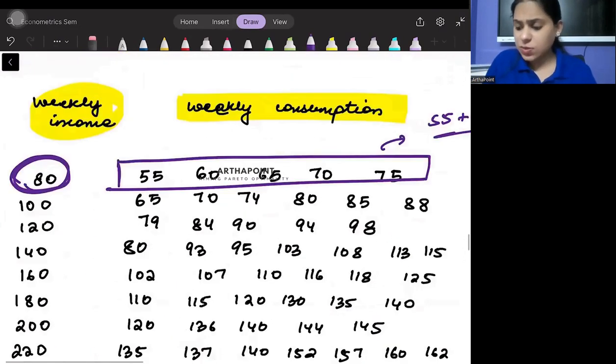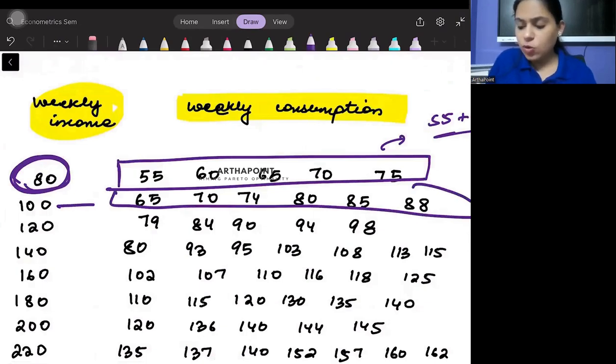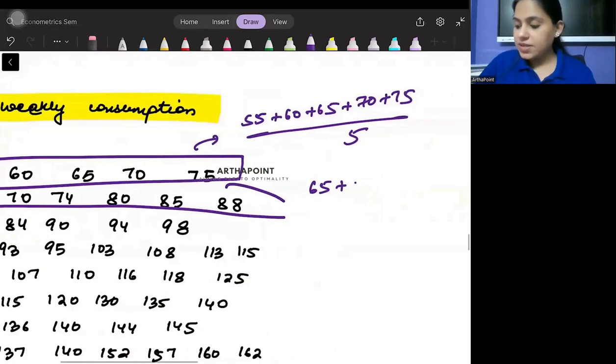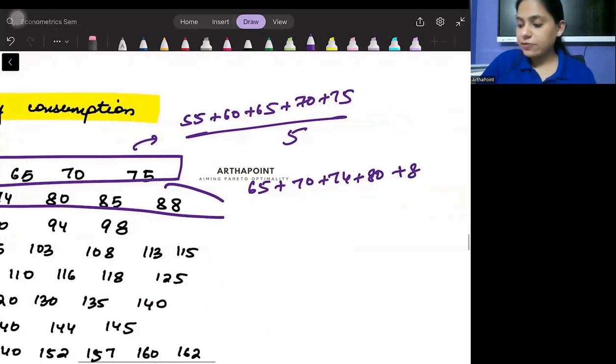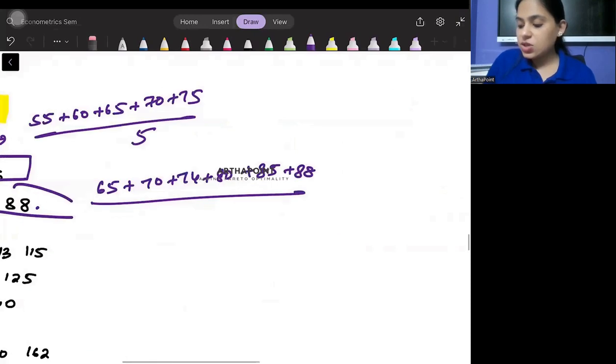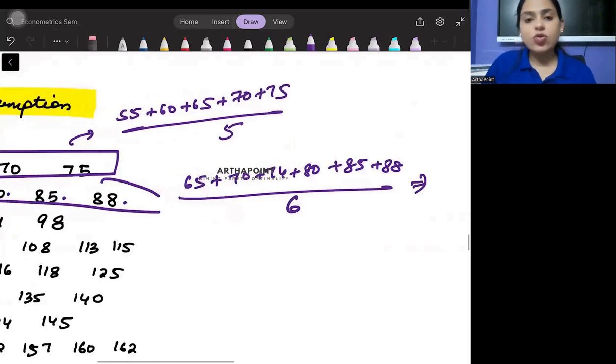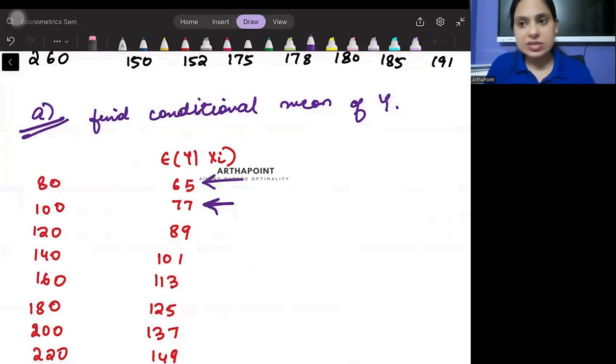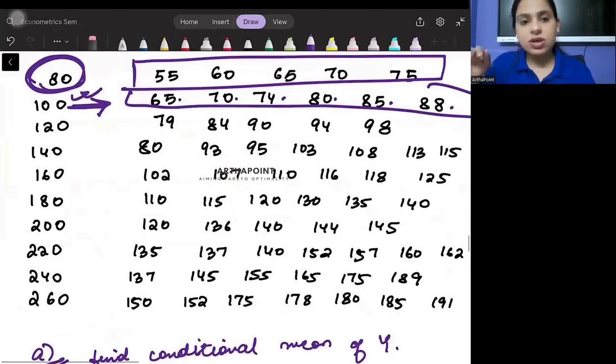Similarly, you will go into the next one. When you hold x at 100, when you hold income at 100, your weekly consumption will be 65 plus 70 plus 74 plus 80 plus 85 plus 88 divided by 6 observations. When you do this, you will get the next term as 77.